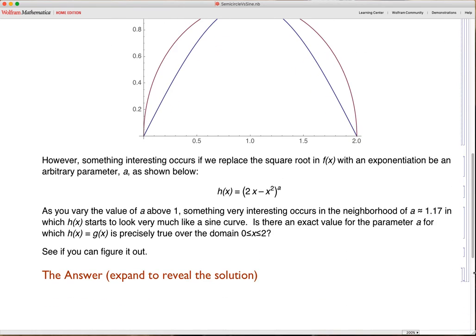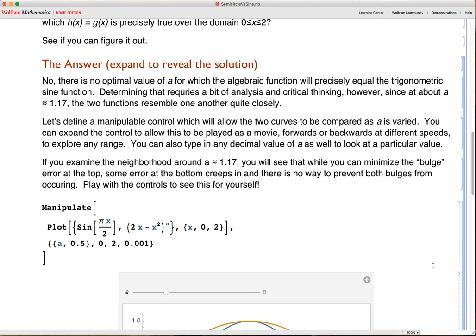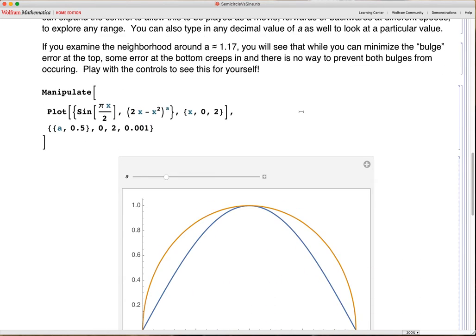So the answer is no. There is no exact value for A that you can find that will precisely make the algebraic function equal the trigonometric function. An esoteric argument for why that might be would be that there's a distinction between what are known as algebraic numbers and transcendental numbers. When you get into trigonometry, that introduces transcendental numbers that can't be expressed algebraically. If there were an exact value, then those two sets would be equal. But that's an esoteric argument,